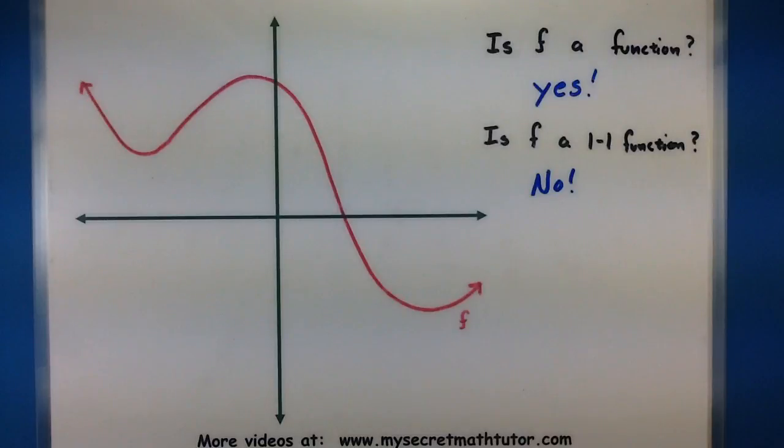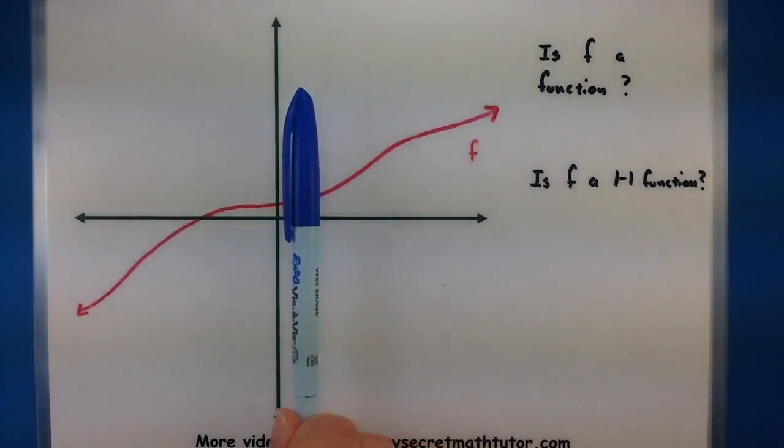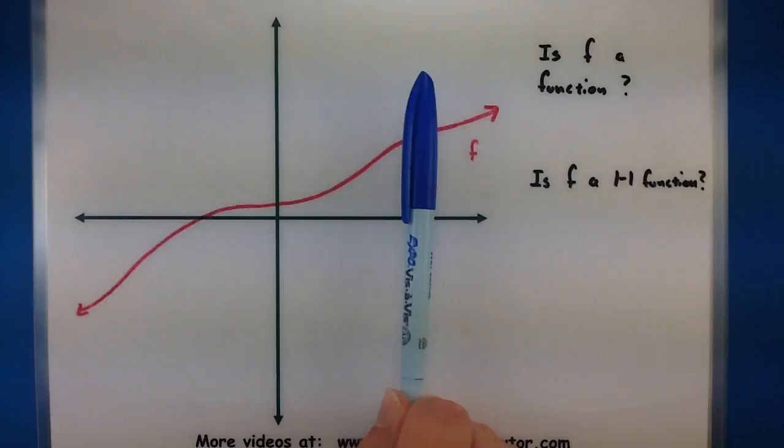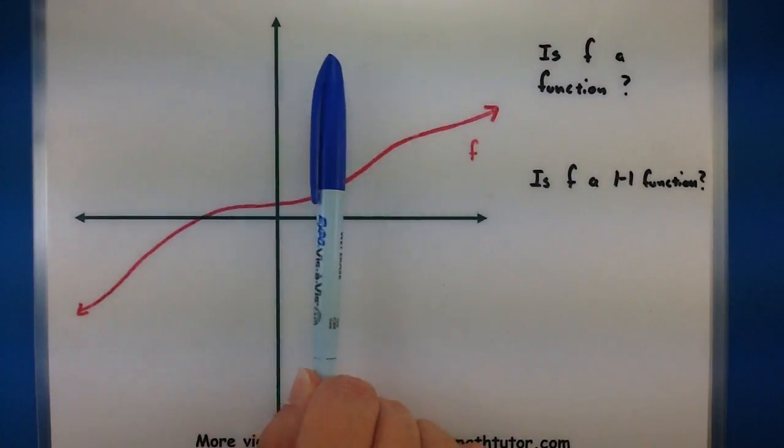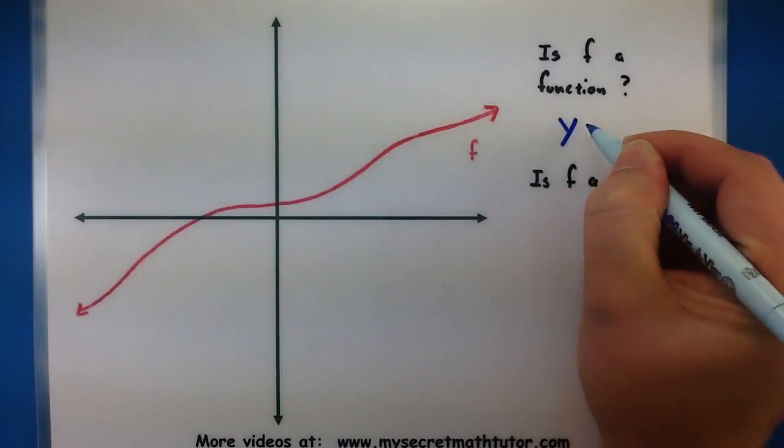Alright let's try this again with another generic function. Something like this. So first we can test it and say okay is this relation a function? Let's use our vertical line test. We're checking to see if it crosses in more than one spot. Doesn't look like it does. So we will say yes.